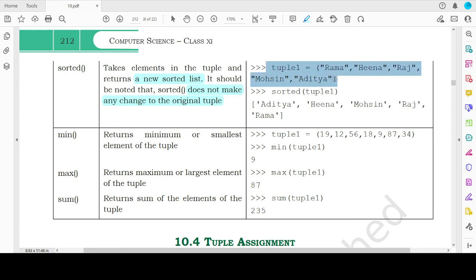So if you have a tuple which has strings Rama, Hina, Raj, Mohsin and Aditya, then when you call the sorted function on this tuple, you get a list. Carefully note that these are square brackets and the values inside this list are sorted alphabetically. So a to z in terms of the ASCII increasing values. So Aditya, Hina, Mohsin, Raj and Rama.